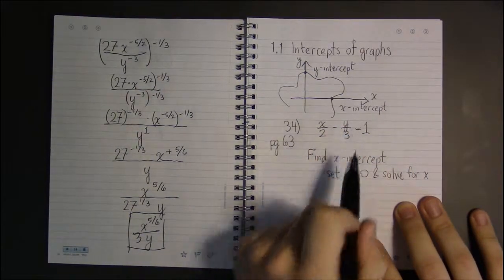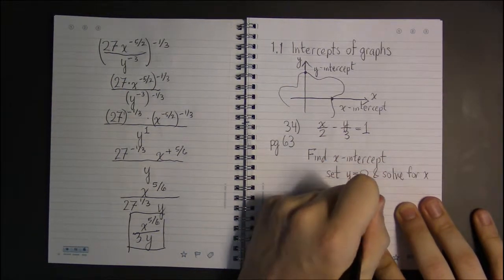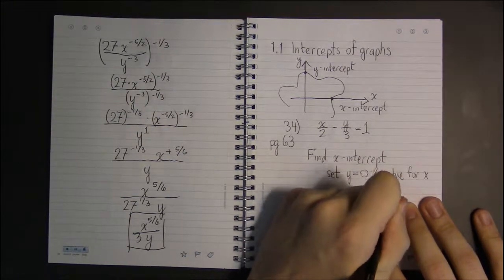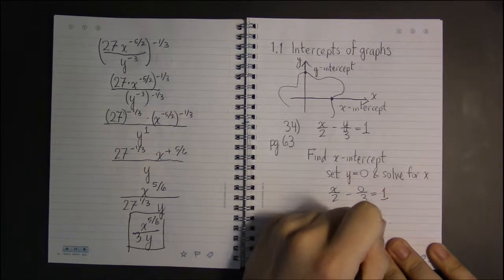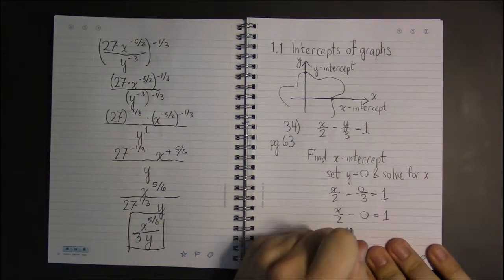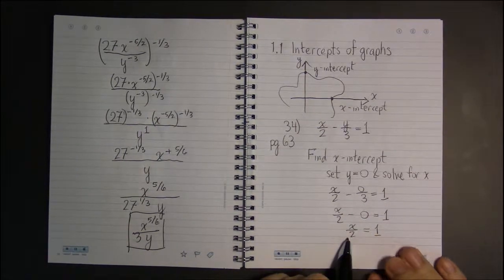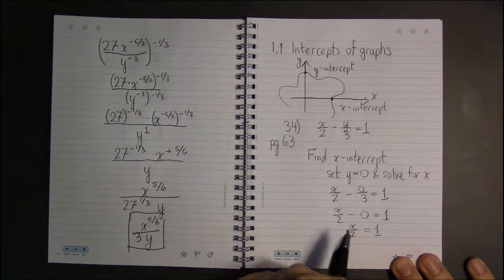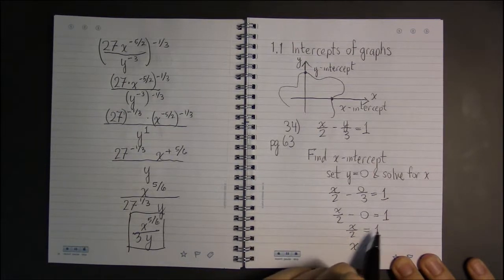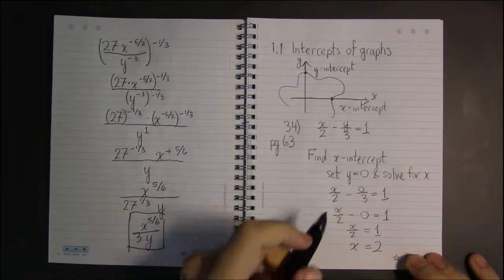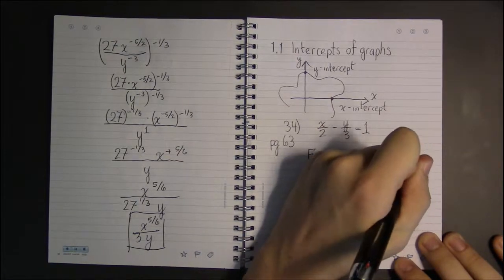So in this case, if we let y be zero, that leaves us with x/2 - 0/3 = 1, and 0/3 is just 0. So this is x/2 - 0 = 1, and anything minus 0 is just itself. So now all we have to do to solve for x is multiply both sides by 2, and 2 times x/2 will just leave me with x, and 2 times 1 will be 2. So the x-intercept is going to be the point (2, 0).